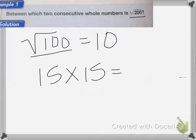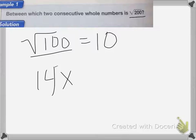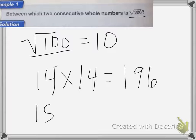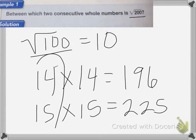So we're going to try 14. And 14 times 14 is equal to 196, which is too small. So that means that the square root of 200 has to be somewhere between 14 and 15. So the answer would be 14 and 15 is where the square root of 200 lands.